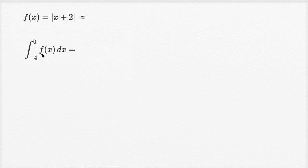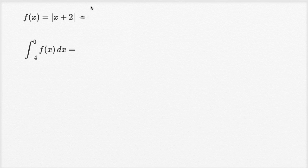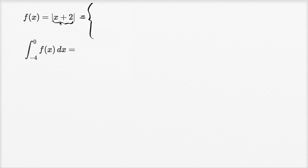When you first do this, you might stumble around a little bit because how do you take the antiderivative of an absolute value function? The key here is to rewrite f of x without the absolute value — we can do that by rewriting it as a piecewise function. We'll think about intervals where what's inside the absolute value is positive or negative. The point at which we change is where x plus two equals zero, or x equals negative two.